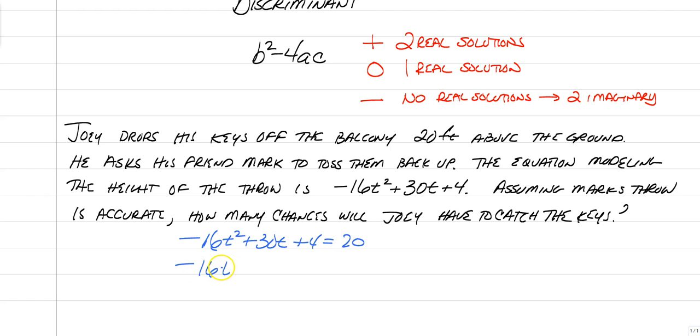So if he throws it at 30 feet per second, we're going to assume that his throw is accurate. How many chances will Joey have to catch the keys? So you can do this a couple of different ways. You can actually go through and solve it, you can use your graphing calculator, or you can use a discriminant. How do you use a discriminant? Well, negative 16t squared plus 30t plus 4 is equal to the height that the keys have to get, which is 20. That's negative 16t squared plus 30t minus 16 is now equal to 0. But we're just going to use a discriminant. The discriminant is b squared minus 4ac. So we have 30 squared minus 4 times negative 16 times negative 16.